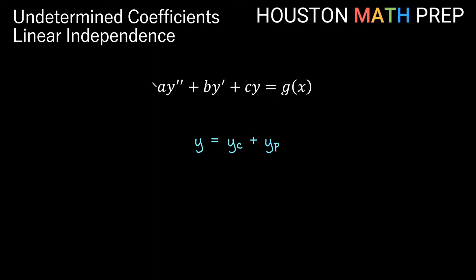If we start with some non-homogeneous equation with constant coefficients a, b, and c, and g of x is some function on the right-hand side, remember that our solution will be y equals some complementary function plus some particular function. For the method of undetermined coefficients, y sub p is based on the form of whatever you see in your g of x on the right-hand side.